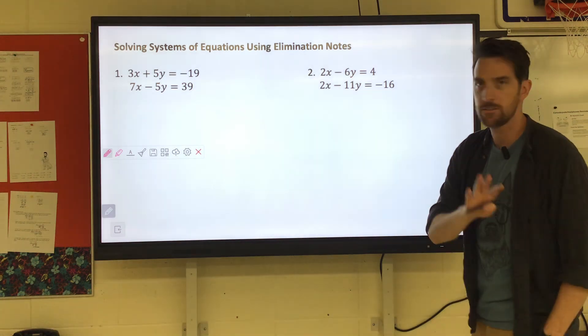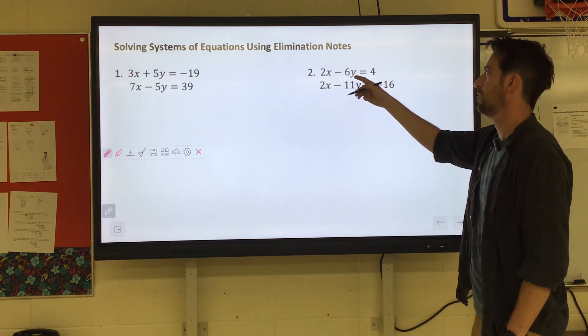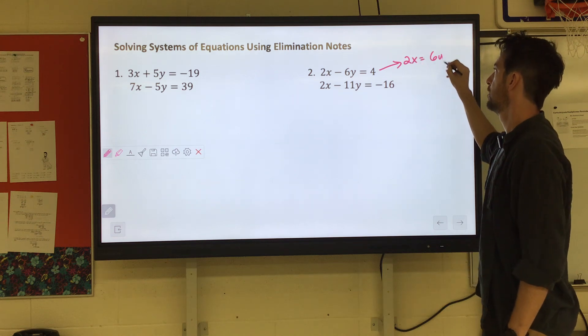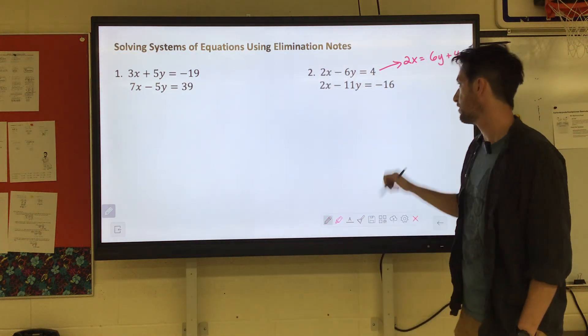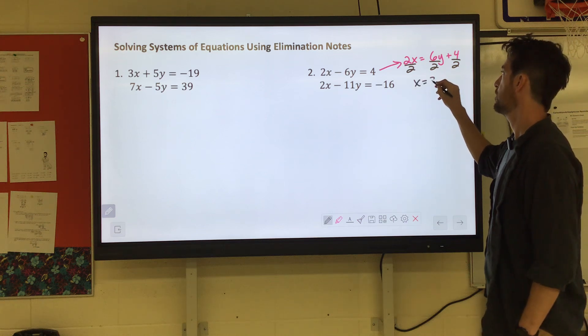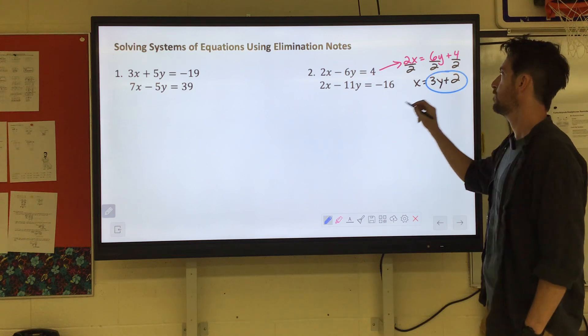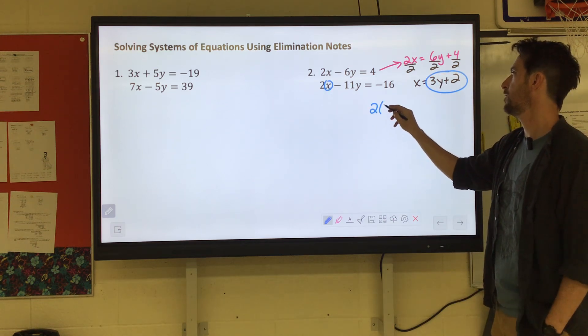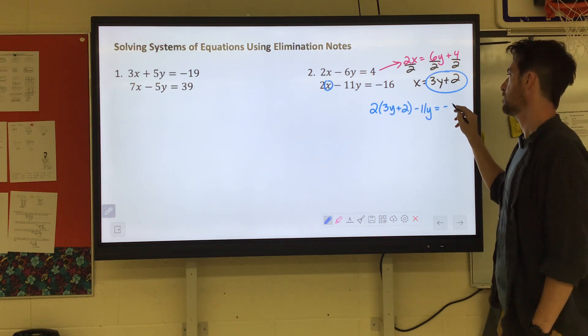So don't write this, but let's say we took that first equation and we were like hey let's get X by itself. So first you'd have to add the 6Y to the other side and then you'd have to divide everything by 2. So you'd get X equals 3Y plus 2 and then you would do substitution and this would replace the X in the other equation. So you'd have 2 times 3Y plus 2 minus 11Y equals negative 16.